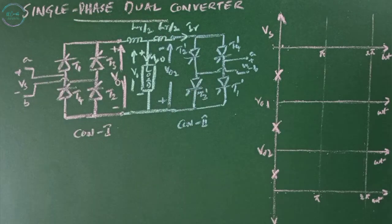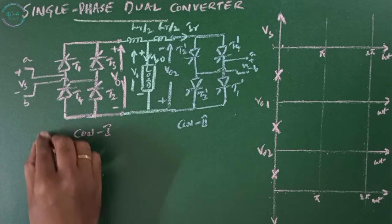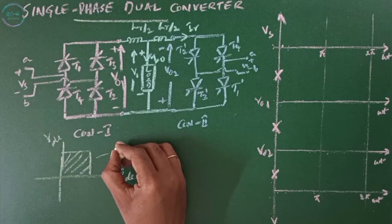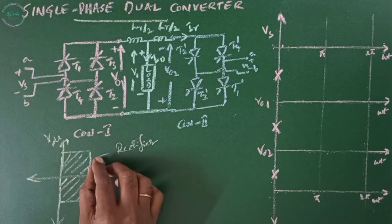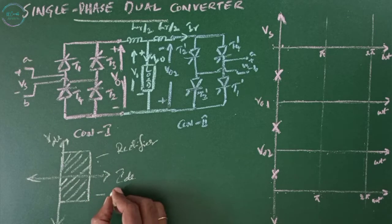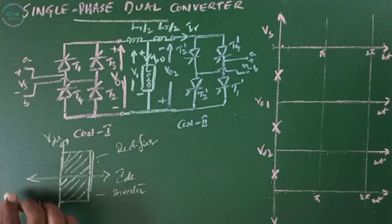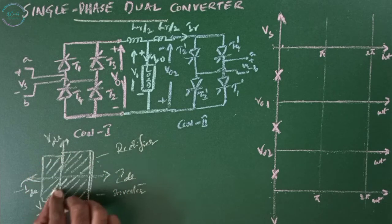Single phase dual converter. The semi-converter operates in the first quadrant where both VDC and IDC have positive polarities, acting as a rectifier. The full-wave converter operates in quadrants one and four — in the first quadrant it acts as a rectifier, in the fourth quadrant it acts as an inverter. Its voltage has both polarities whereas current has only positive polarity. When four-quadrant operation is needed — where current also needs to be reversed — we go for a dual converter which operates in all four quadrants.